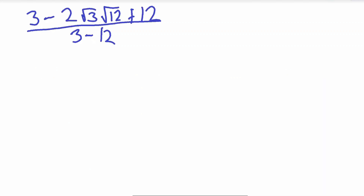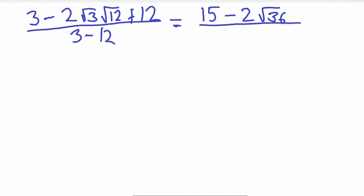Now we simplify further. We can add 3 plus 12 to get 15. Since both values are under square roots we can multiply the insides together: 3 times 12 is 36, so we have 2 times square root of 36. The denominator gives us 3 minus 12, which is negative 9. Square root of 36 is a perfect square — 6 times 6 is 36 — so square root of 36 is simply 6.